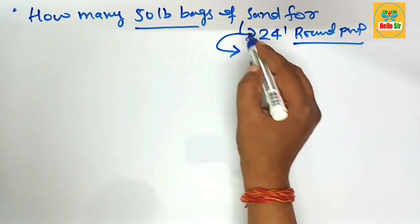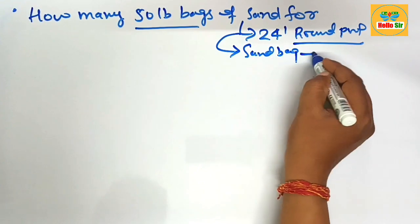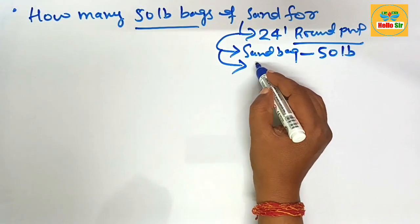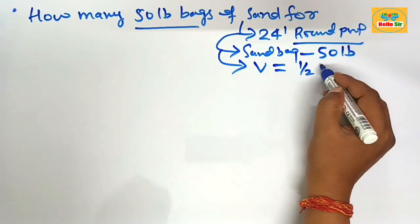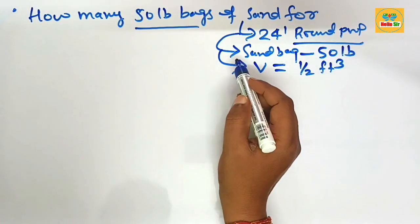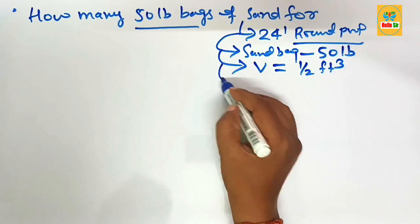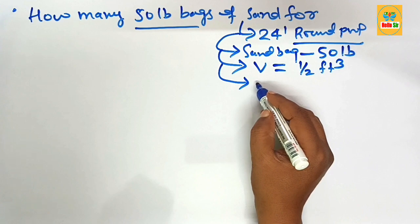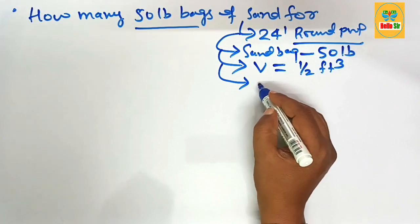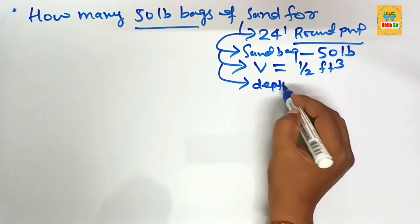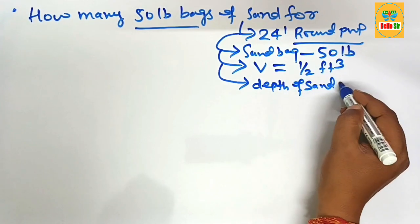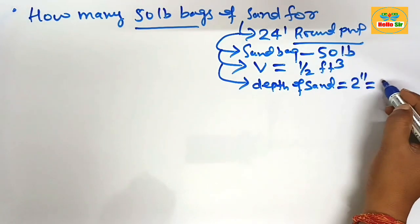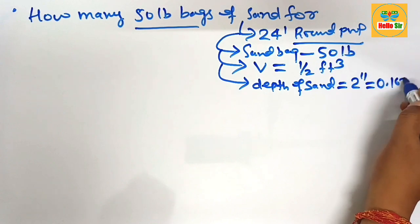Sand bags are sold in 50 pounds, and each bag of sand yields a volume of about half a cubic foot. Remember this. The number of bags of sand required depends on the depth of sand required for leveling of the sand base. The depth of sand required for the sand base is a minimum of two inches, which equals 0.167 foot.